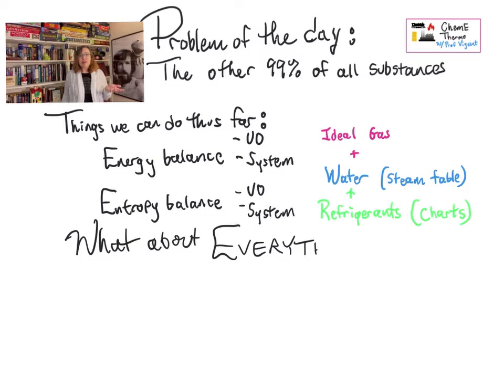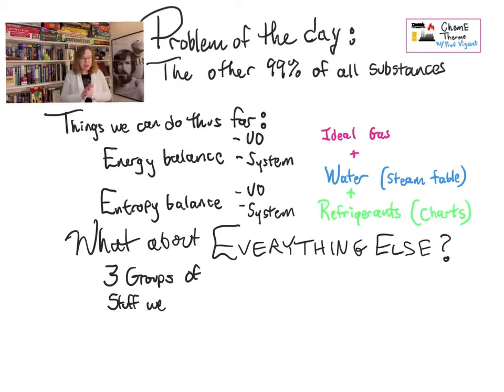So the question you may be answering yourself is, what about every freaking other thing on the planet that is not water, a refrigerant, or an ideal gas? And we want to be able to do the three things with all of this stuff that makes up the world. And the three things we want to do are still, we want to be able to do energy and entropy balances, but I'll get to that in a second.